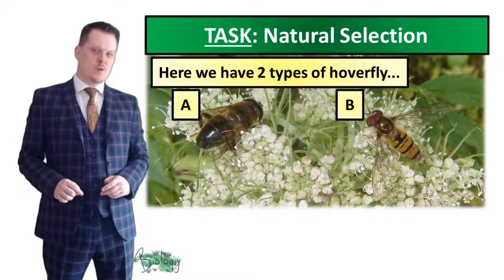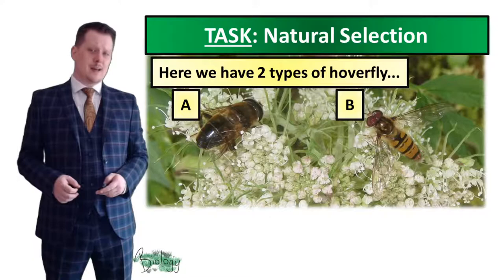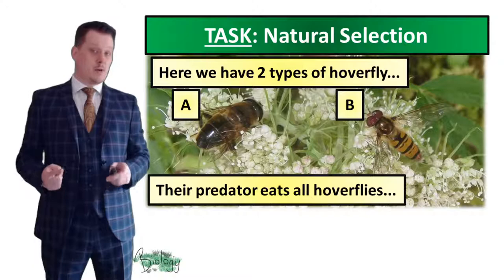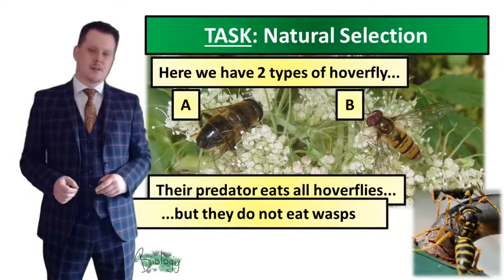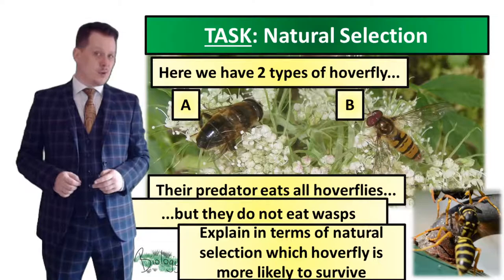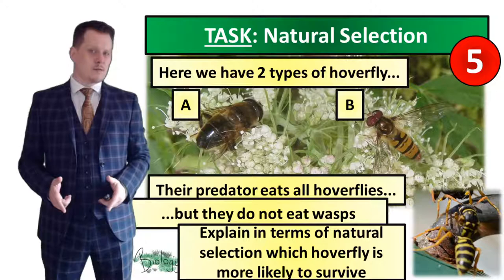So now we're going to have a look at something similar. We've got two types of hoverfly: A and B. These two hoverflies have a predator that eats all of the hoverflies — both A and B — but this predator does not eat wasps. I want you to explain in terms of natural selection which species of hoverfly is more likely to survive. Take five seconds, and if you need more time, pause the video.